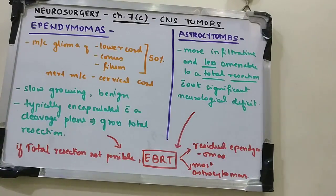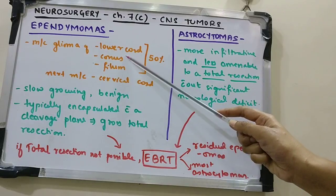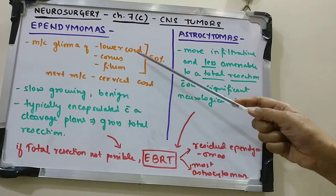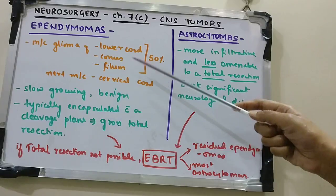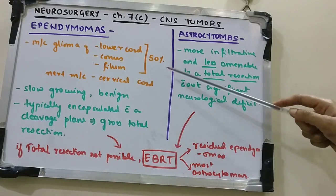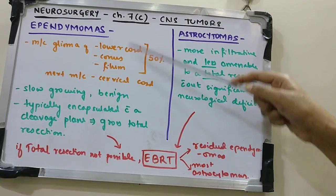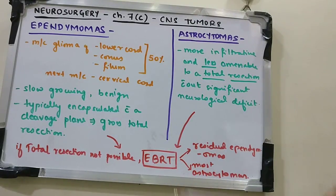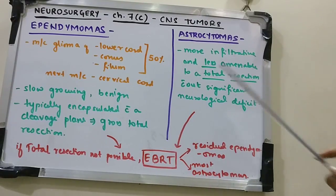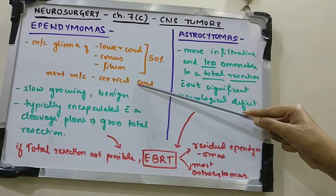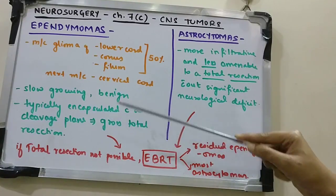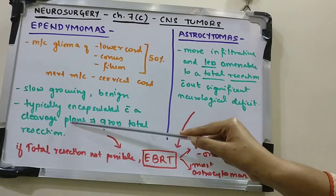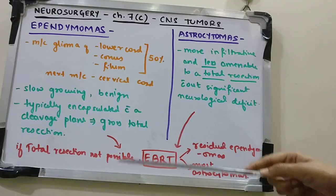Ependymomas are the most common glioma of the lower spinal cord, affecting the conus medullaris and filum terminale — 50% of spinal ependymomas occur in the lower cord, with the cervical cord being the next most common location. They are generally slow-growing, benign, and typically encapsulated, with a cleavage plane between the tumor and normal cord, making gross total resection feasible.